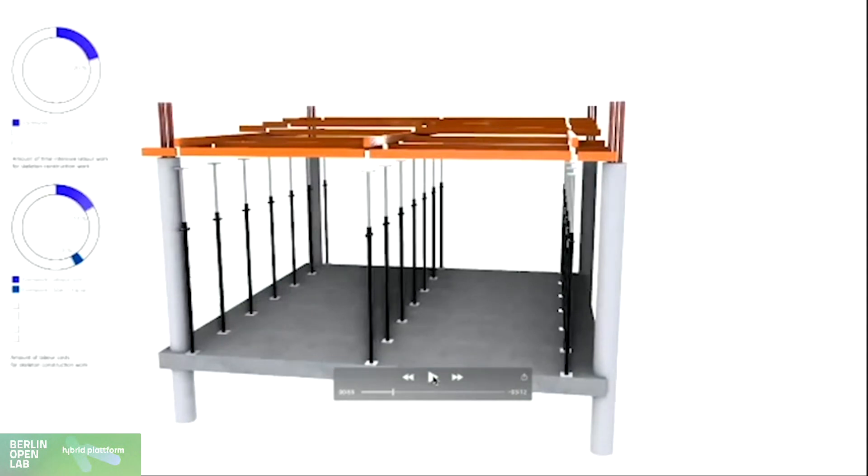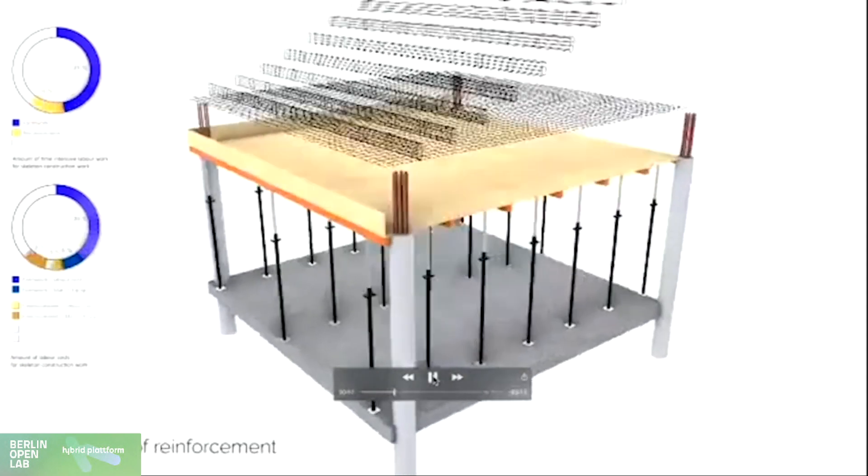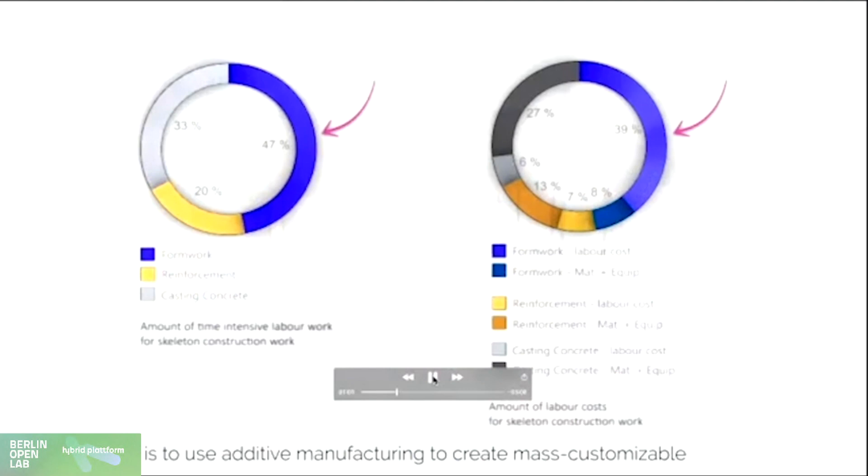First of all you install formwork which actually takes most of the costs and efforts to install and then you put in the reinforcement as you can see here. After reinforcement is done you do the on-site concreting. The most effort goes into the construction and assembly of formwork which also has to be disassembled.